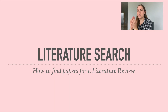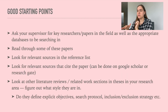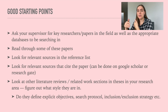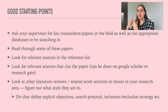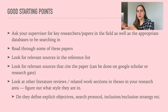This video is about the literature search and how to find papers for a literature review. A good starting point is to ask your supervisor what the key research papers and key researchers are in the field, as well as the appropriate databases to look in. That way you'll have a list of main papers as a starting place — you can read through those, understand the general topic, and look for relevant sources in the reference list.